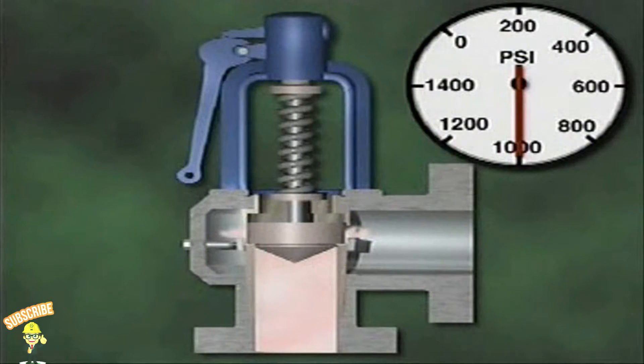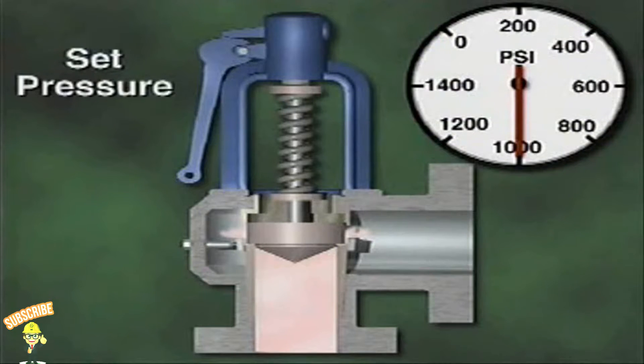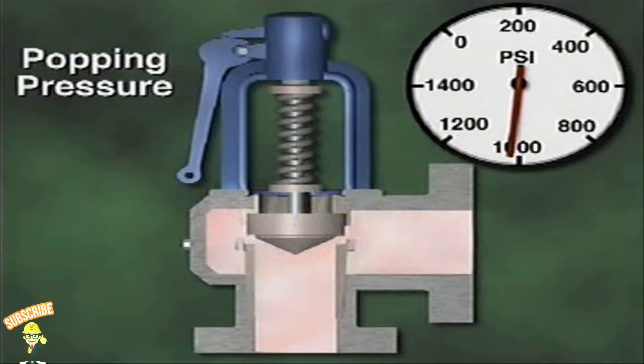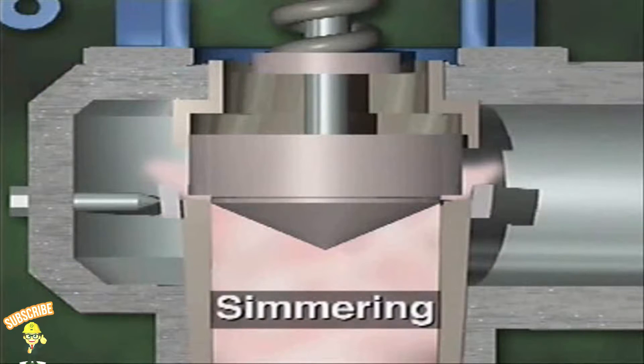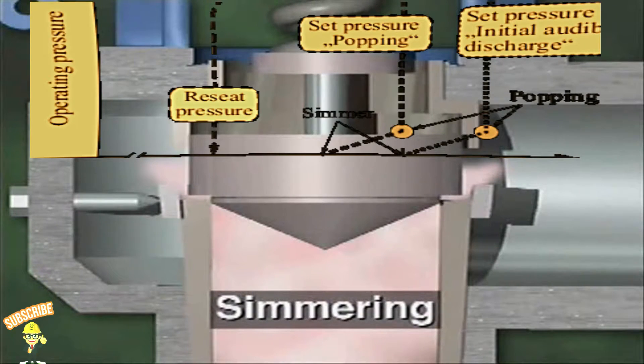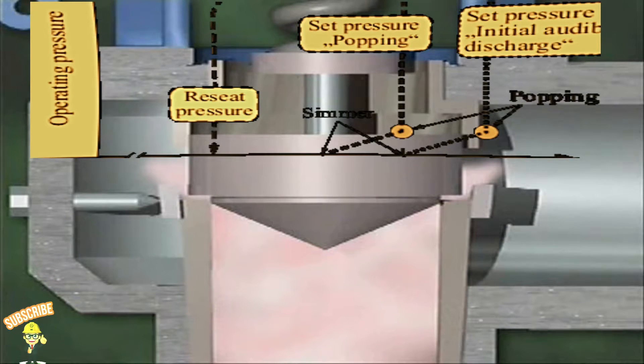The pressure at which the valve's disc begins to lift off the seat is called the valve set pressure. The pressure at which the valve actually pops open is the popping pressure. In most cases, simmering occurs briefly before a safety valve opens fully. During simmering, the disc is only slightly lifted and the valve discharges a small amount of fluid. Simmering lasts for only a fraction of a second until system pressure acts on the lip of the disc.